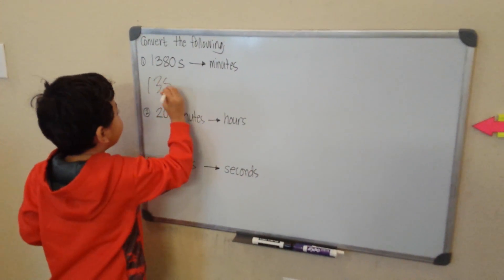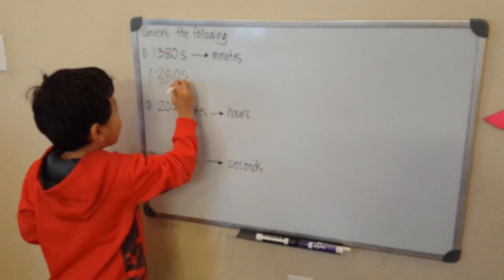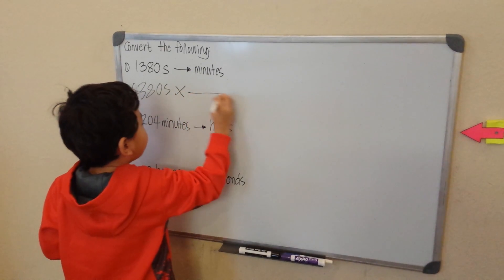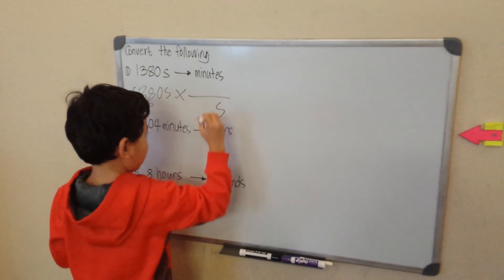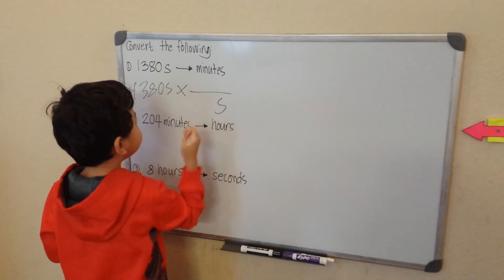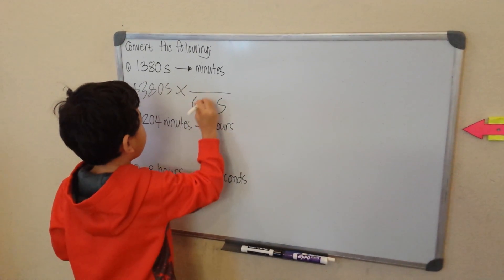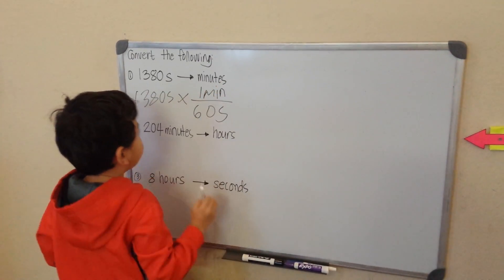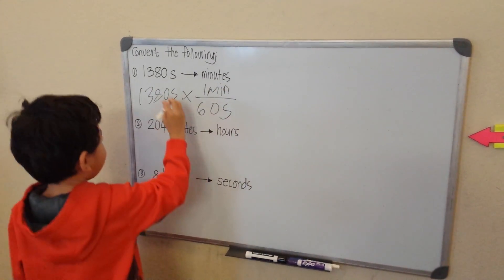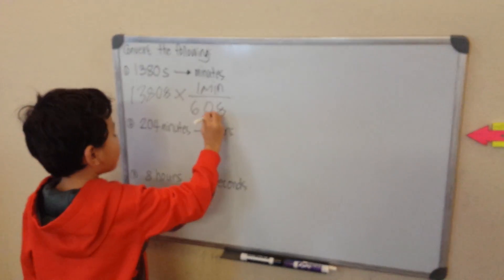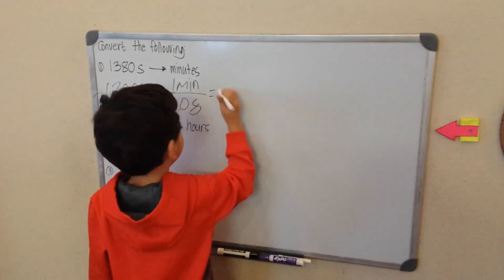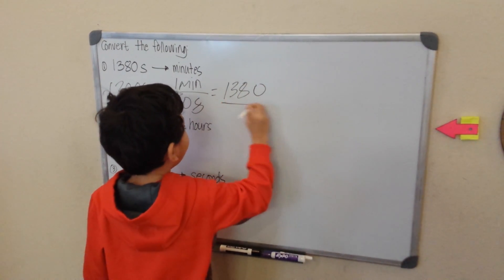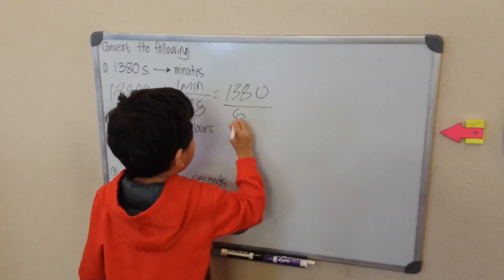1380 seconds converted to minutes. Let me multiply this. Seconds at the bottom and minutes at the top. I know there's 60 seconds in one minute. So then we cross, and then we can divide it. That equals 1380 divided by 60.